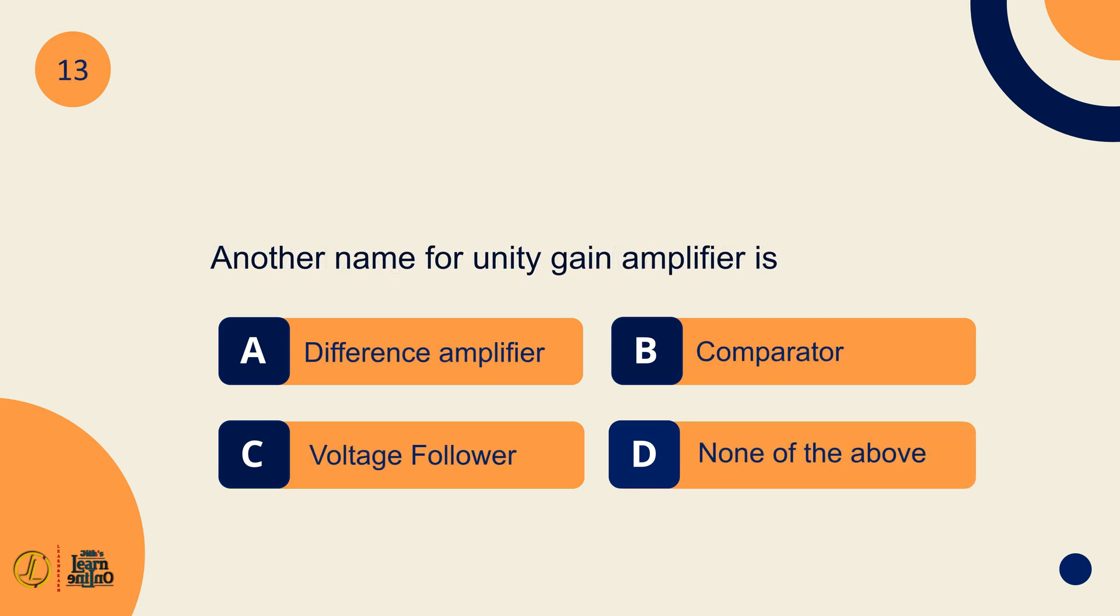Another name for unity gain amplifier is voltage follower.